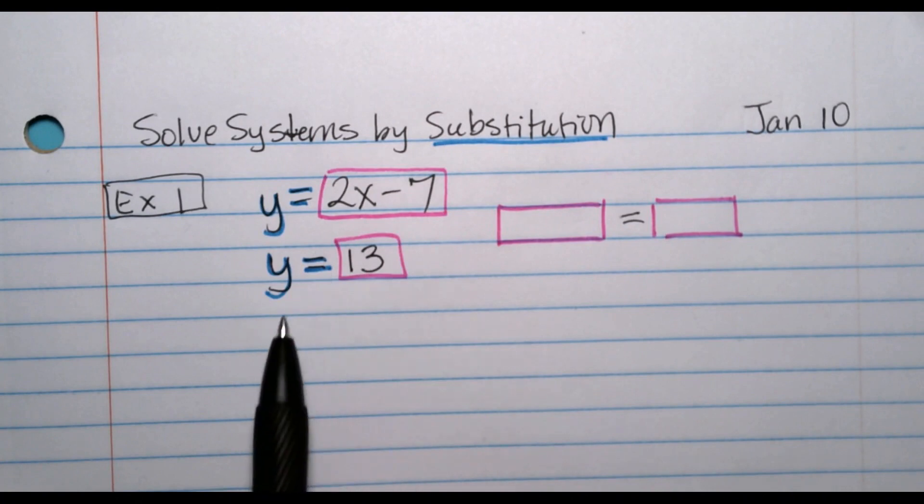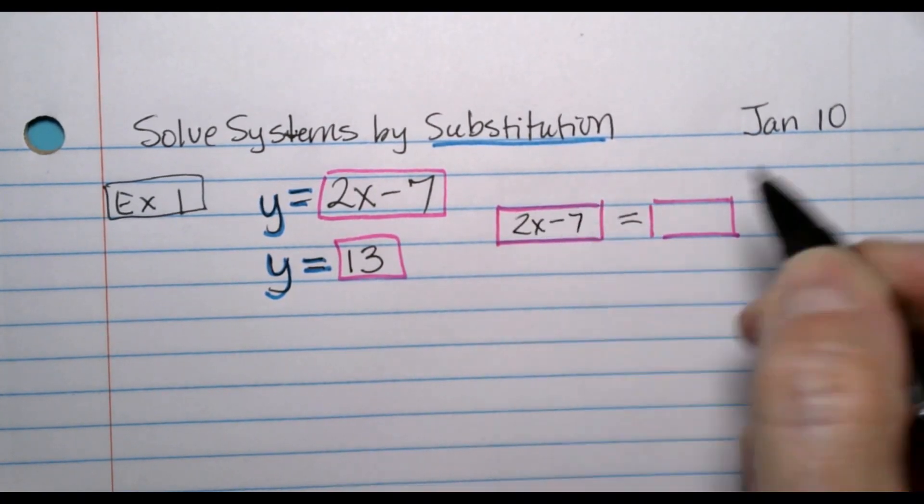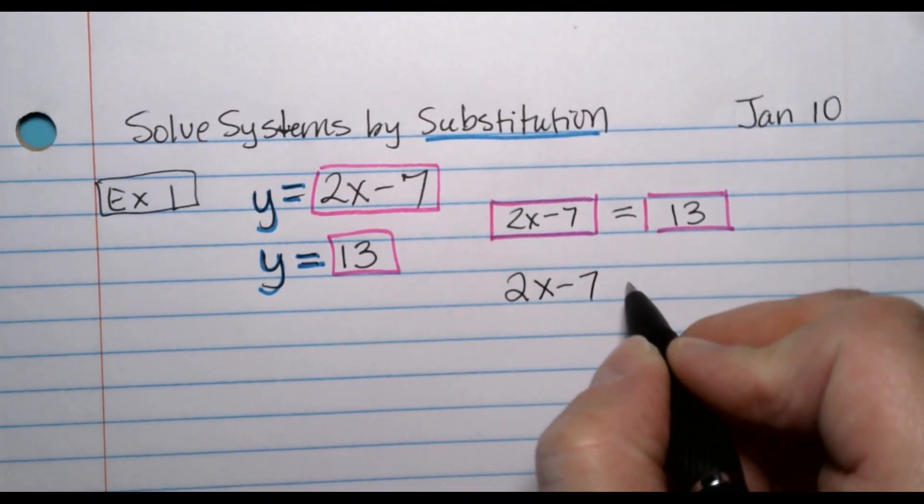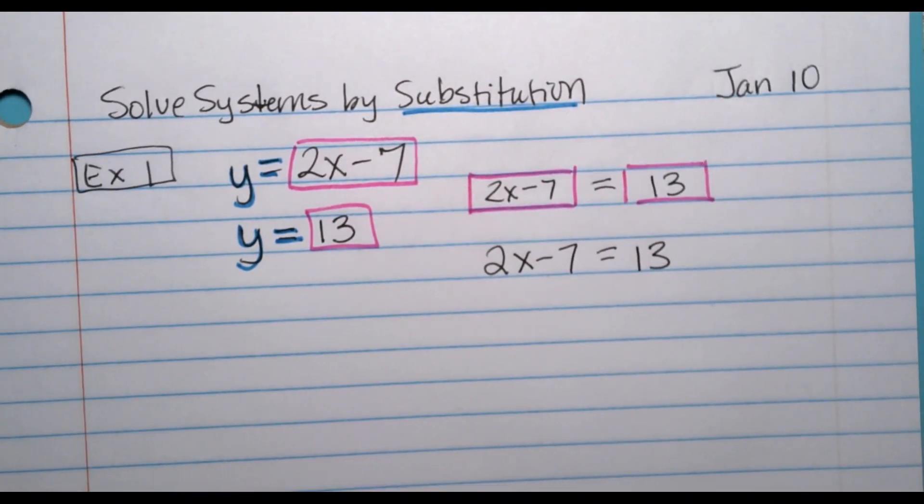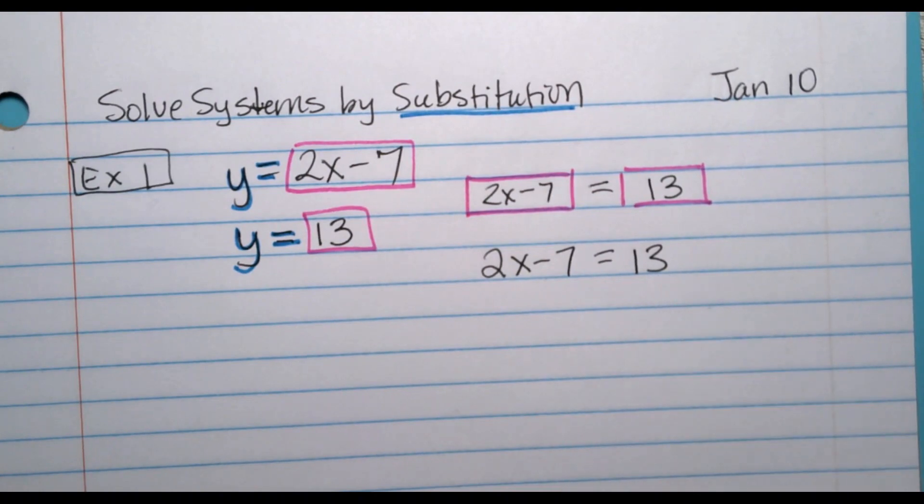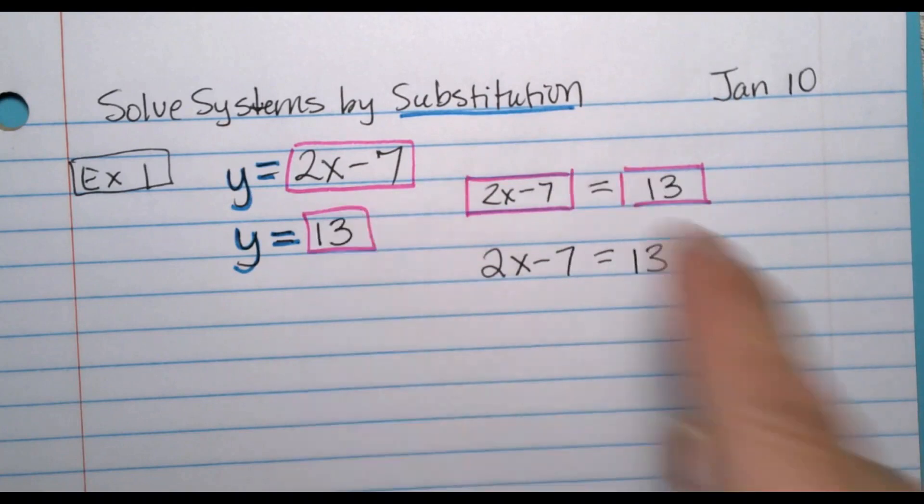This says y equals this, but then y also equals that. Y is supposed to be equaling these two things, and these two things look different. It must make sense logically that those two things equal each other. Y equals this, but y also equals that, so that means those two things are equal to each other. I'm drawing the boxes just because I think it makes more sense.